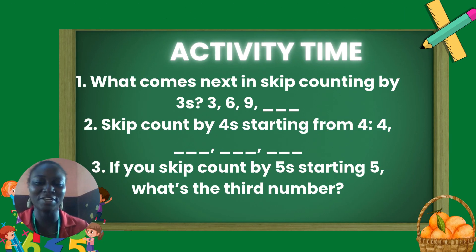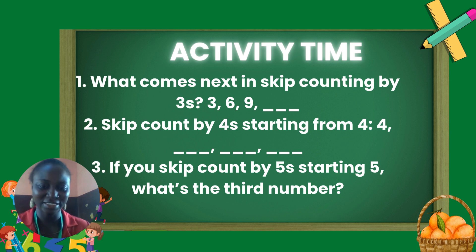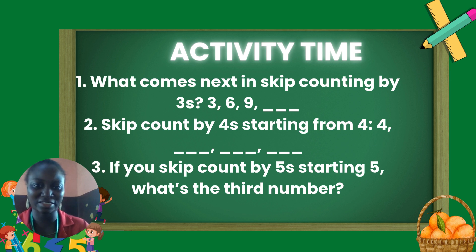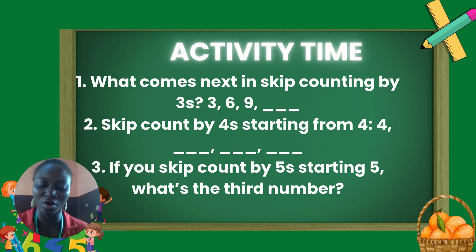Activity time! Let's try this activity together. The first question: what comes next in skip counting by threes? When you skip count by threes, what number comes next? So, we have three, six, nine. Three plus three is six. Six plus three is nine. So, what will be the next number? Nine plus three, which is twelve. Our answer is twelve.